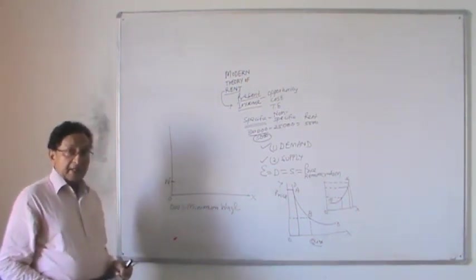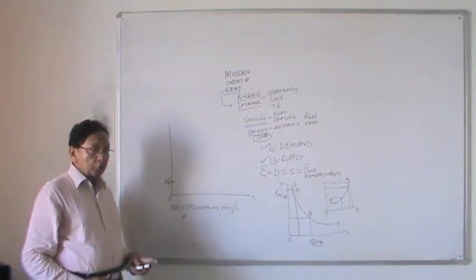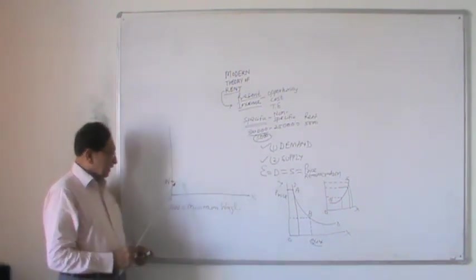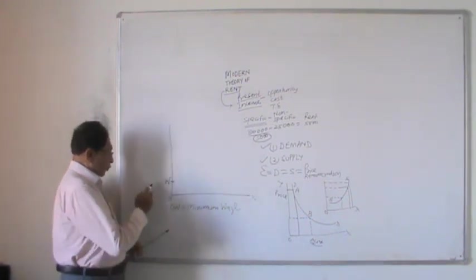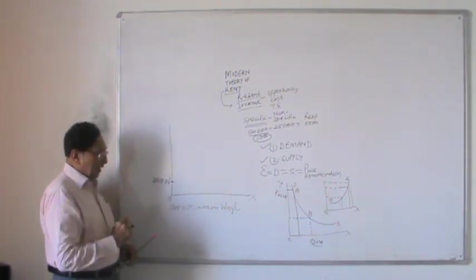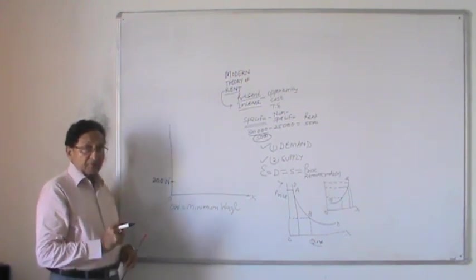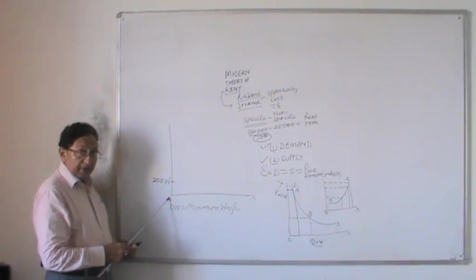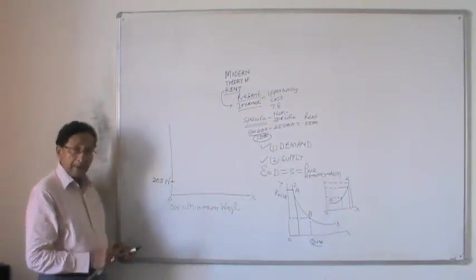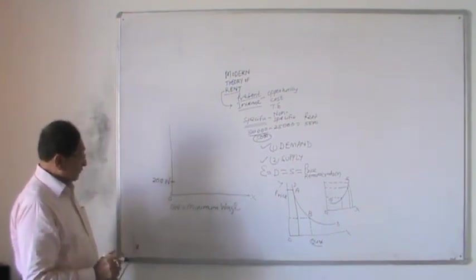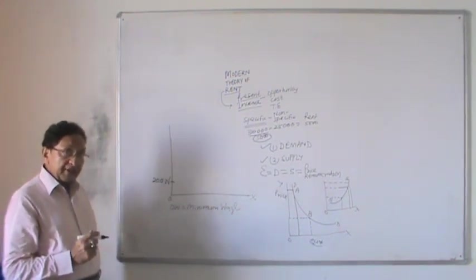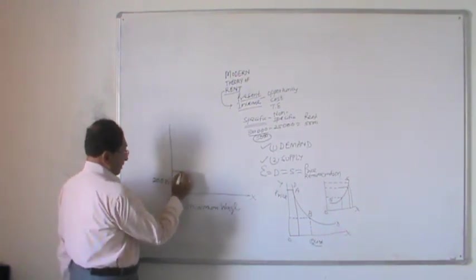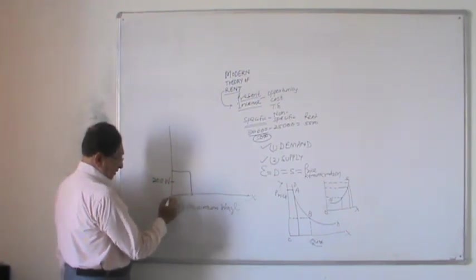All employers have to pay a minimum wage, otherwise they are subject to prosecution. The supply curve of labor starts from a minimum wage — for example, minimum wage is 200 rupees. At this rate, workers will start working, and at 200 rupees the supply is zero workers. After that, if wages increase, labor will increase supply — say from 0 to 100 workers.